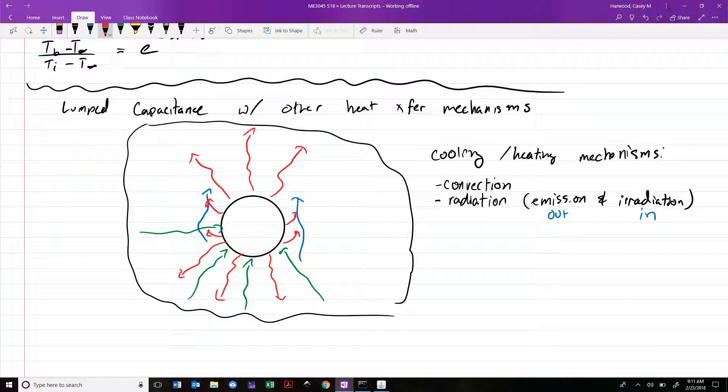Radiation involves both emission and irradiation, where emission is out and irradiation is in. Additionally, we might have something going on inside the subject. Let's say rather than just being a hot metal ball, this is some sphere that's a shell full of nuclear fuel. You might have some rate of heat generation inside of the sphere. So we also have as a possible mechanism thermal energy generation.